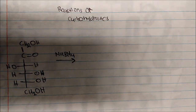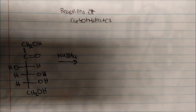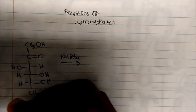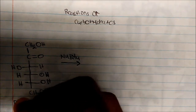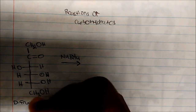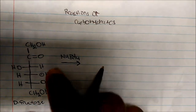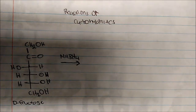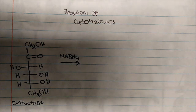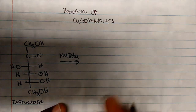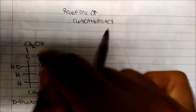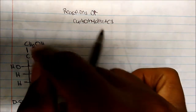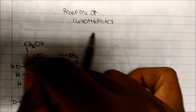In this video, I'm going to talk about the reactions of carbohydrates in different reagents. So what if I take D-fructose and add sodium borohydride? This is a reducing agent, so I'm always looking at my carbonyl.